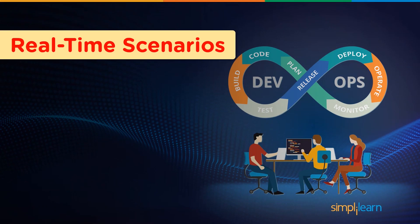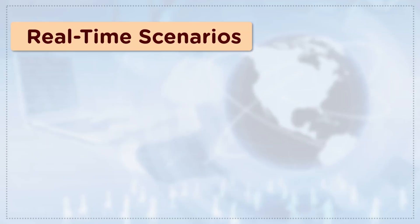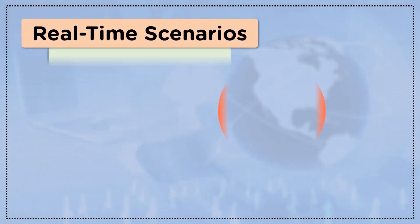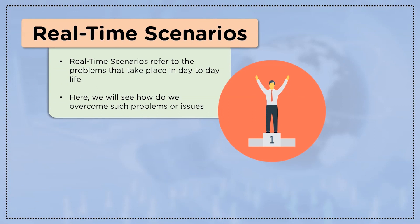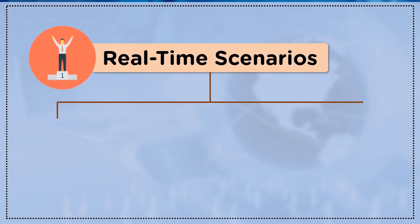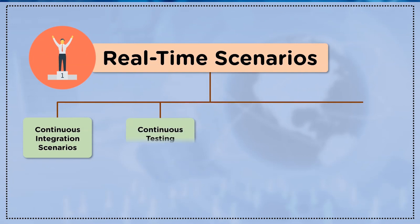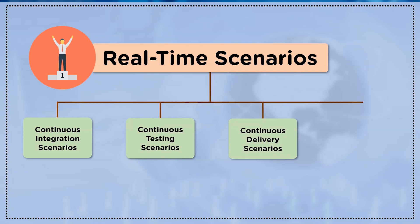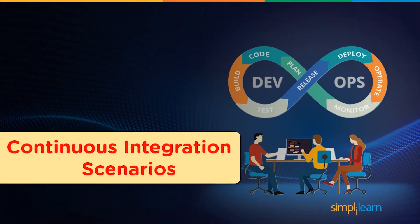Now let's look at our main topic: real-time scenarios. Real-time scenarios refer to the problems, issues, or challenges that happen in our daily lives, and in this section we shall look at ways to overcome such issues. We have divided the real-time scenarios into four subsections: continuous integration scenarios, continuous testing scenarios, continuous delivery scenarios, and DevOps scenarios. Let's begin with continuous integration scenarios.